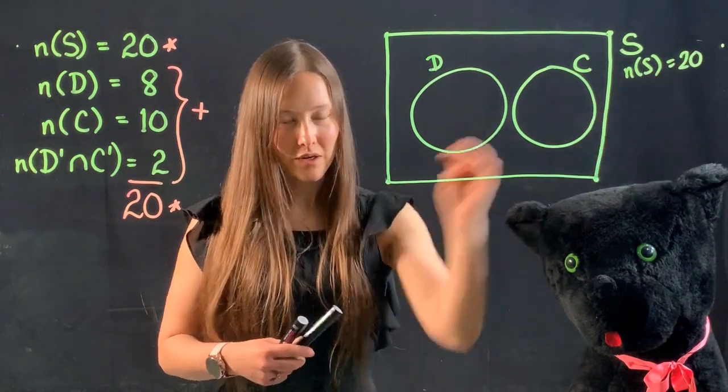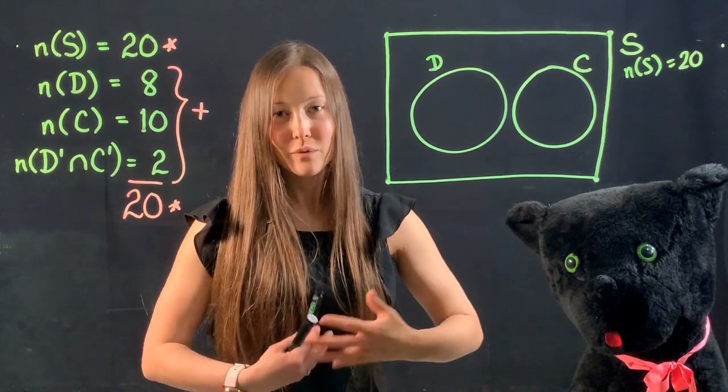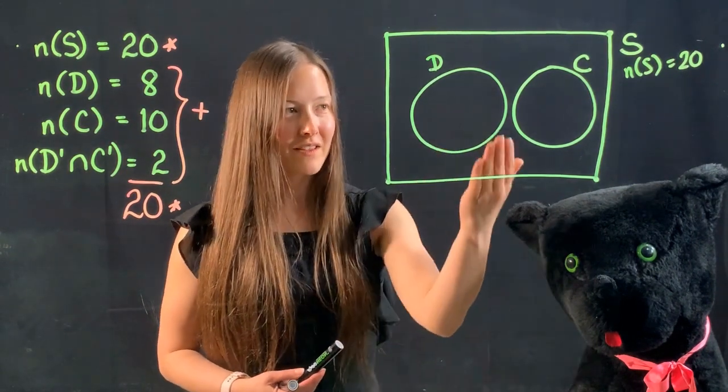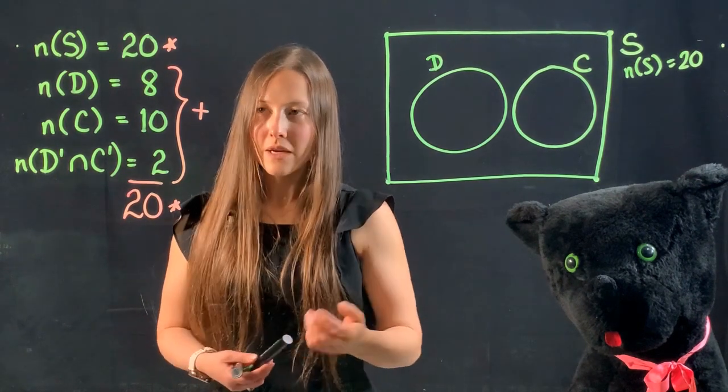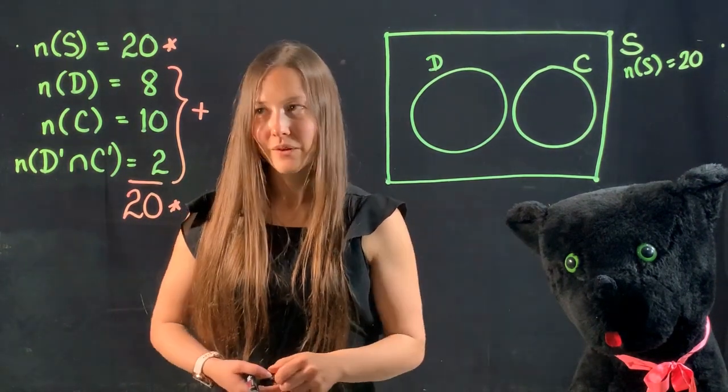This part is not actually part of the Venn diagram, but it's helping me to remember to check in the end that everything within my Venn diagram should total to 20. So now I'm ready to start filling in my Venn diagram with the data.